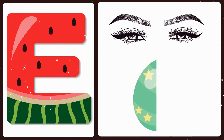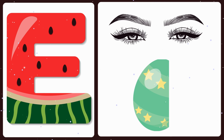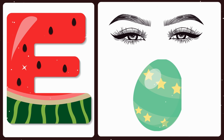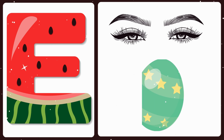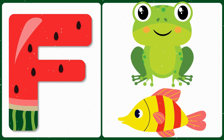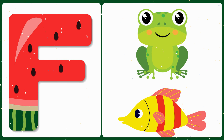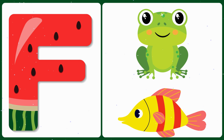E — E is for eyes, E is for egg. F — F is for frog, F is for fish.